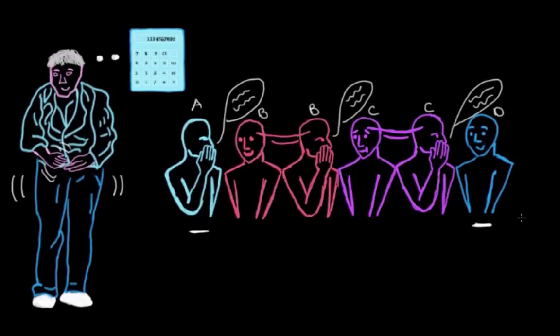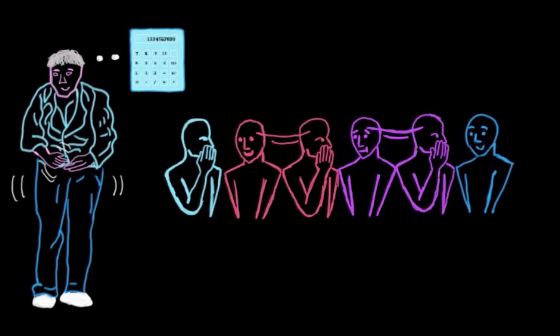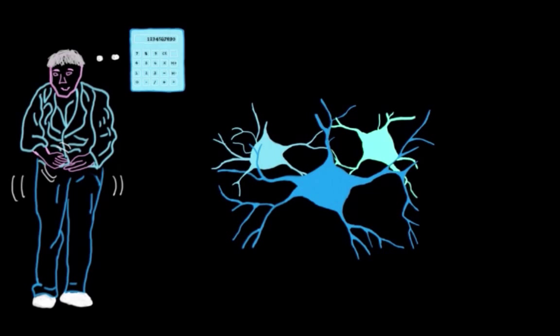So in order for the correct message, the correct instructions on how to navigate the city, to get from this first person to the last person, we really need all of these people in this little network to each pass along the correct message. Because if even one of them messes it up a little bit, maybe says the wrong street name or the wrong bus number, the whole message will be changed. This is how neurons talk to each other in the brain to get things done.